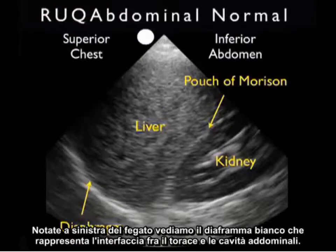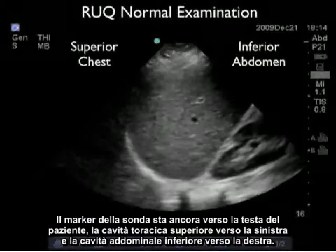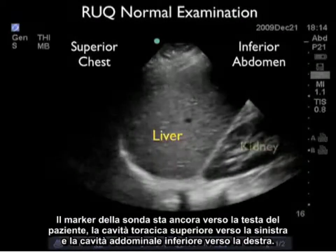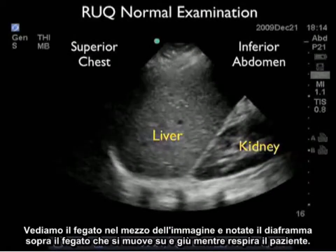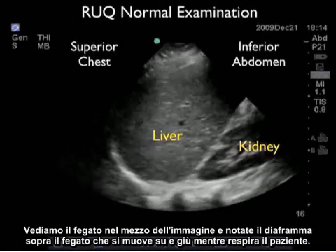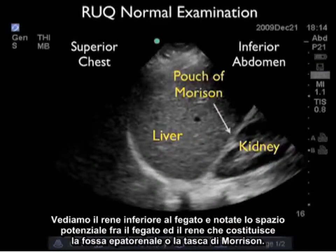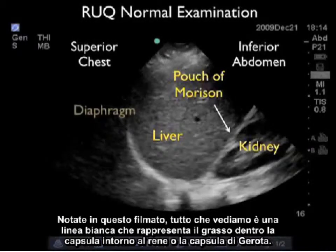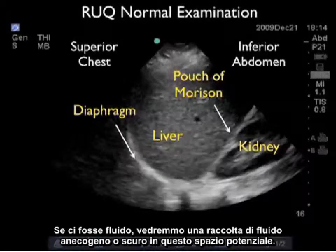Notice to the left of the liver, we see the white diaphragm that represents the interface between chest and abdominal cavities. Let's take a look at another normal right upper quadrant examination. Again, the probe marker is towards the patient's head, superior chest cavity towards the left, inferior abdominal cavity towards the right. We see the liver in the middle of the image, and notice the diaphragm above the liver moving up and down as the patient breathes. We see the kidney inferior to the liver, and notice the potential space in between the liver and the kidney that makes up the hepatorenal fossa, or pouch of Morrison. Notice in this video clip, all we see is a white line representing the fat within the capsule around the kidney, or Gerota's capsule. If there was fluid, we would see a dark or anechoic fluid collection in this potential space.